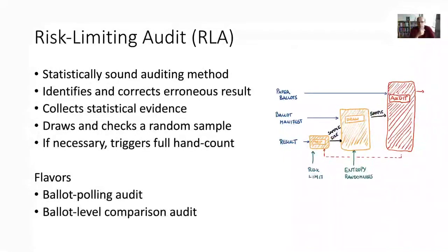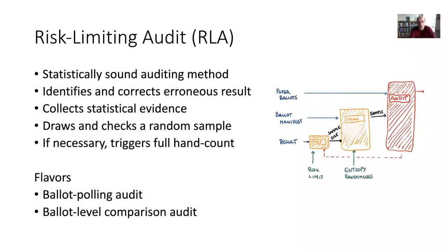A risk-limiting audit — you've probably heard about these in past talks. Let me recapitulate and summarize what they are. Risk-limiting audits are a statistically sound auditing method — there's no question about it. It's statistically proven correct, and many people in the world have looked at the math behind it and agree the math is right. In this talk I am not going to put in question whether risk-limiting audits are sound; I'm just saying they are sound. The idea is to identify and automatically correct an erroneous election result.